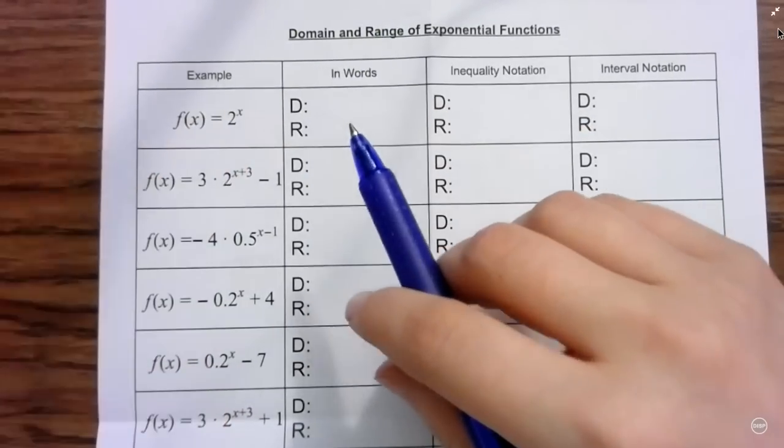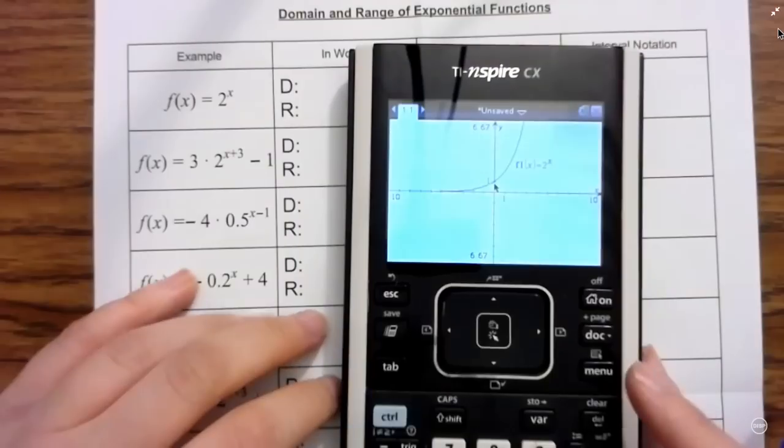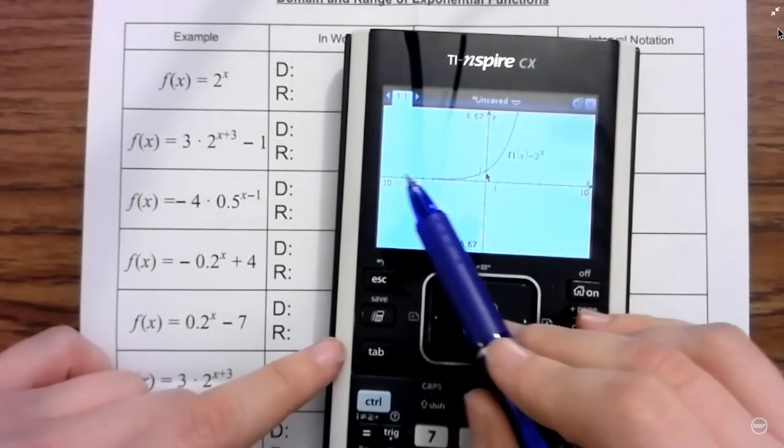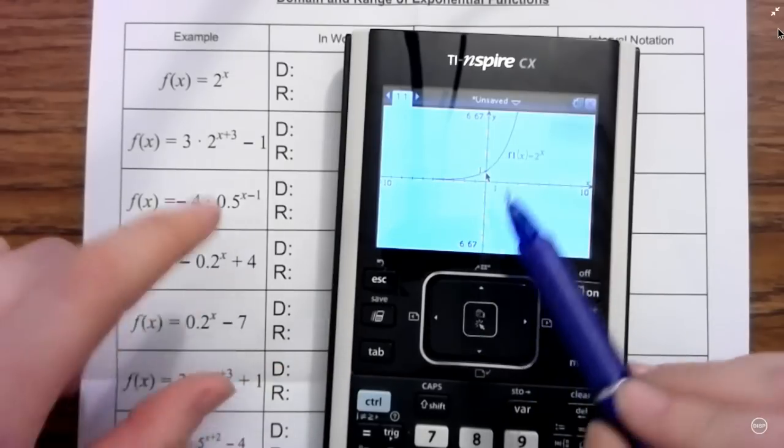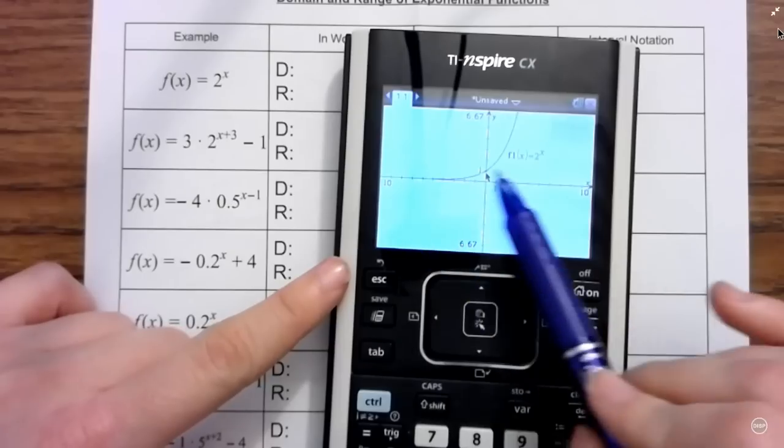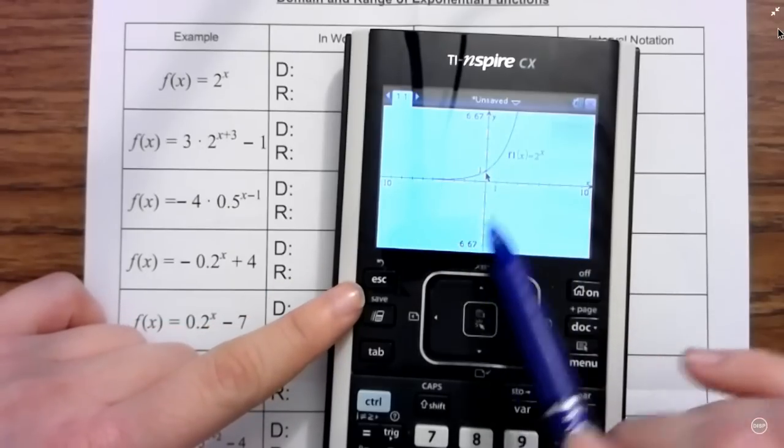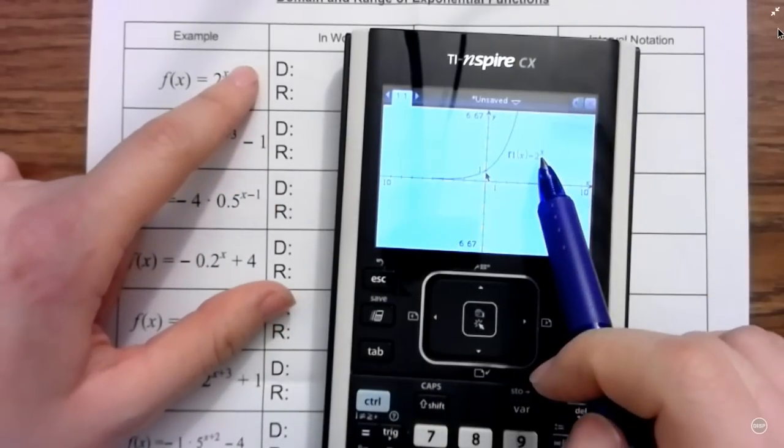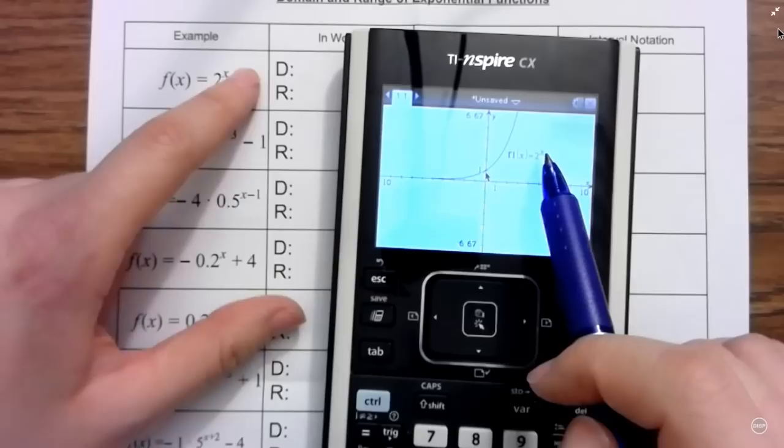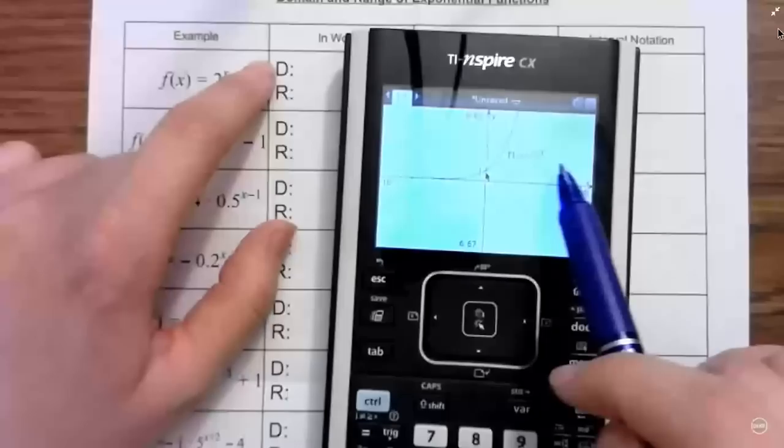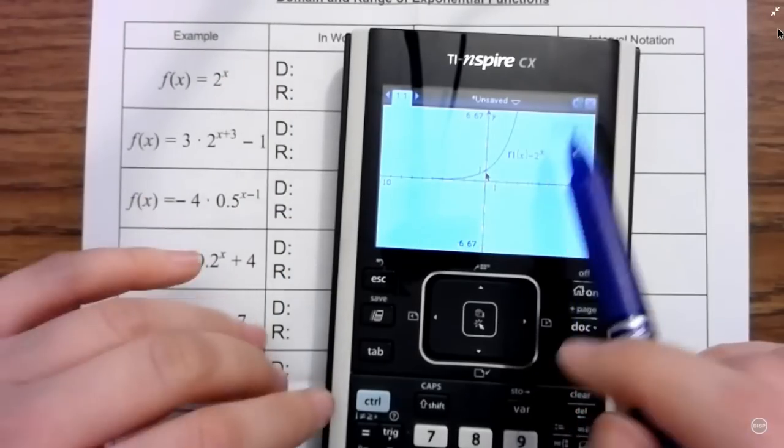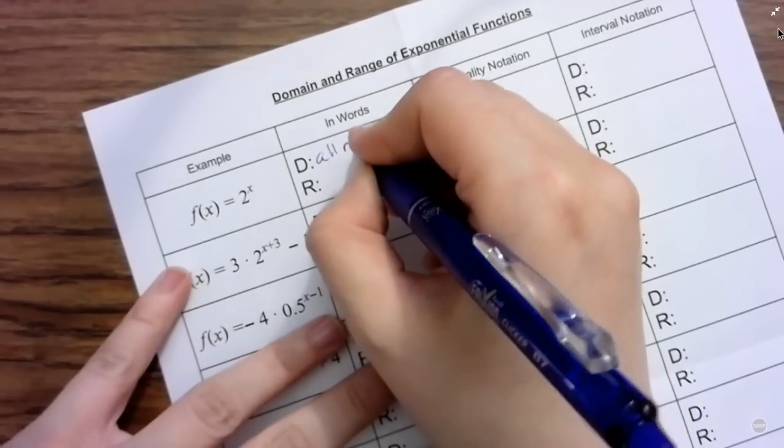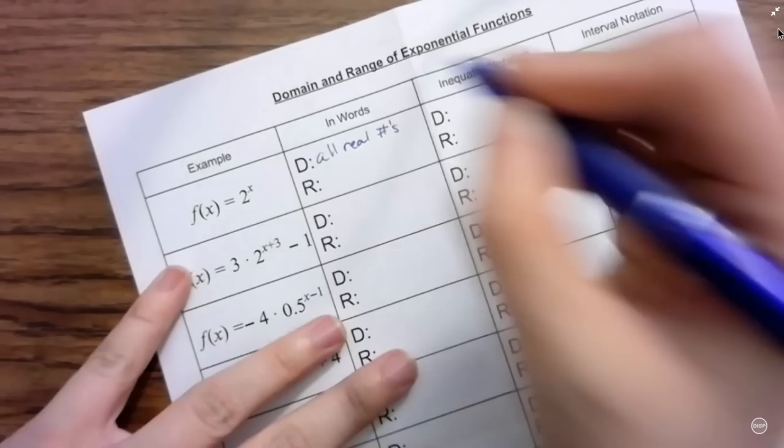So I'm going to start with my parent function, 2 to the x power, which I have right here on my calculator. As you can see, we've got a horizontal asymptote at y equals zero, it's right on the x-axis, and my graph exists above it. So I have positive y values, but no negative y values. And as far as left and right for my domain, I can put any x value up there I want. I can take two to any power I want to. So my domain is going to be all real numbers, because there are no restrictions on what x value I can have.